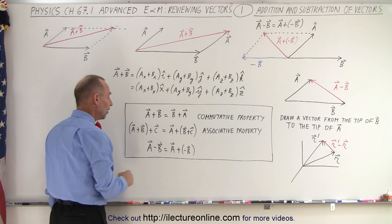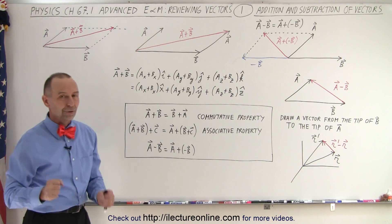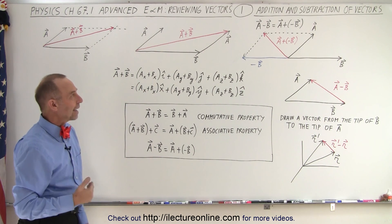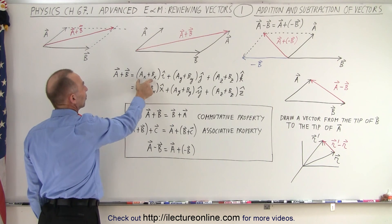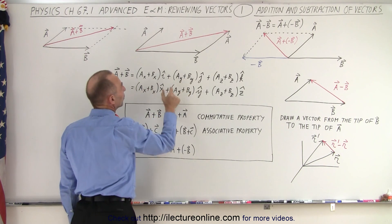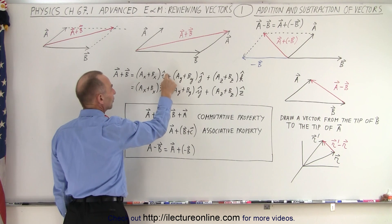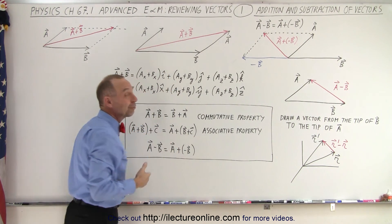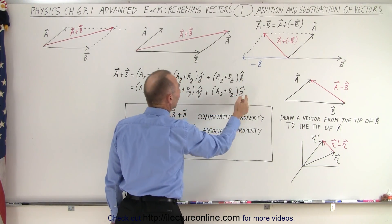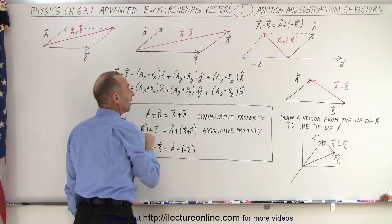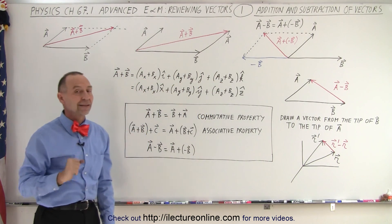When we subtract vectors, A minus B is the same as A plus the negative of B. If you remember that, you're ready to add and subtract vectors. One more thing to consider: when we add two vectors together, we add the X components together, the Y components together, and the Z components together. The X components point in the X direction. Note that we can use the i unit vector or the x unit vector — it's simply a matter of preference. Similarly, j or y, and k or z. In essence, when we add vectors, we add the X components, Y components, and Z components together.